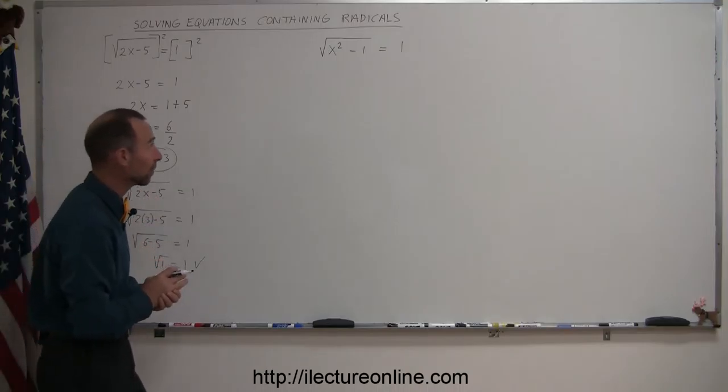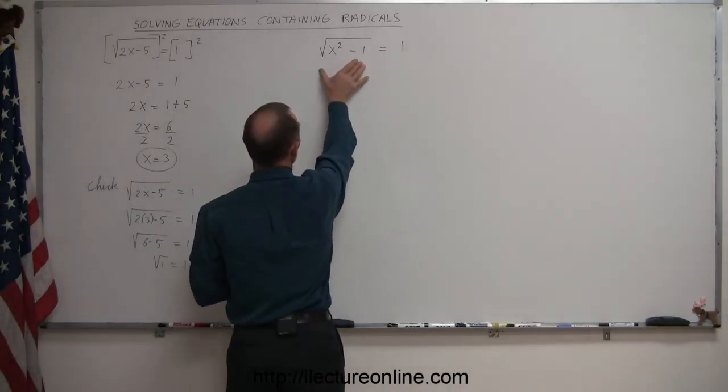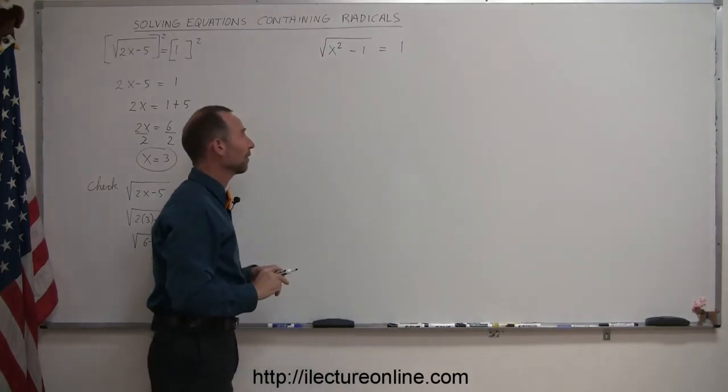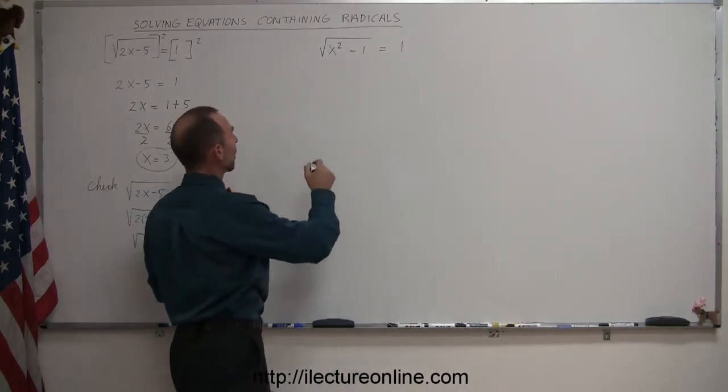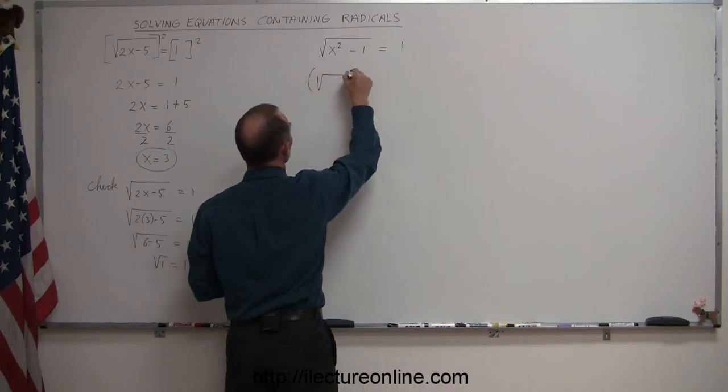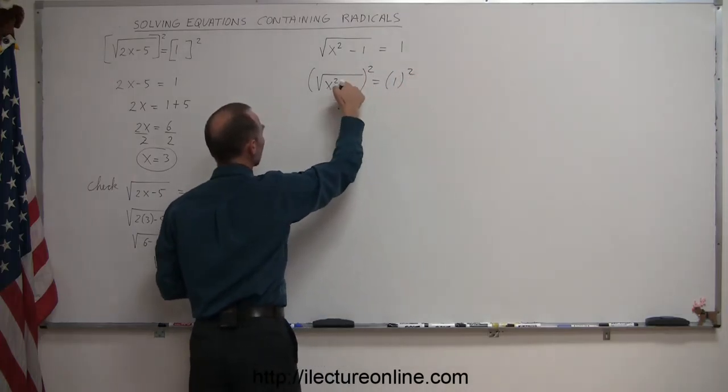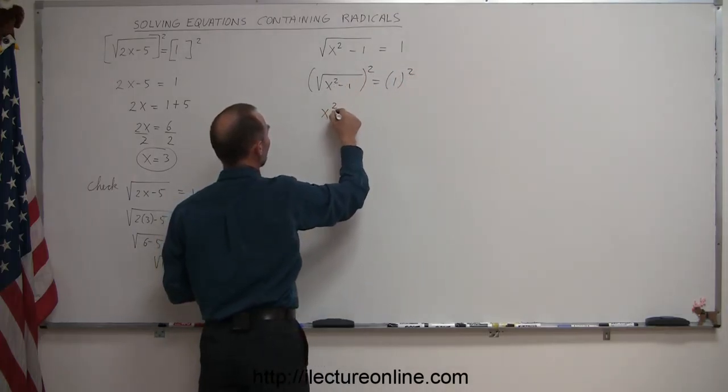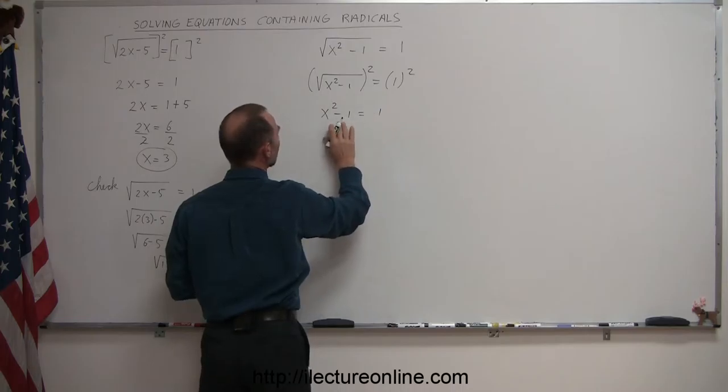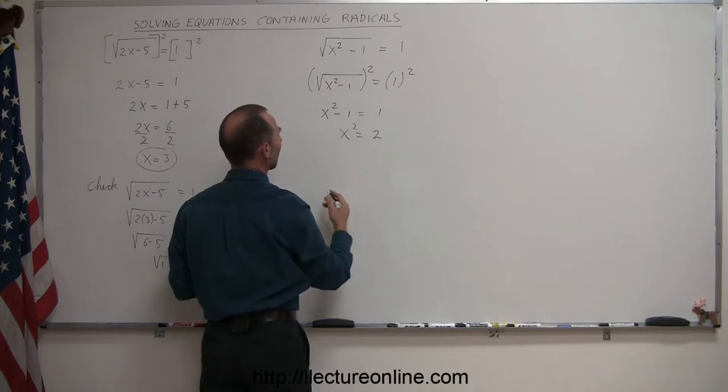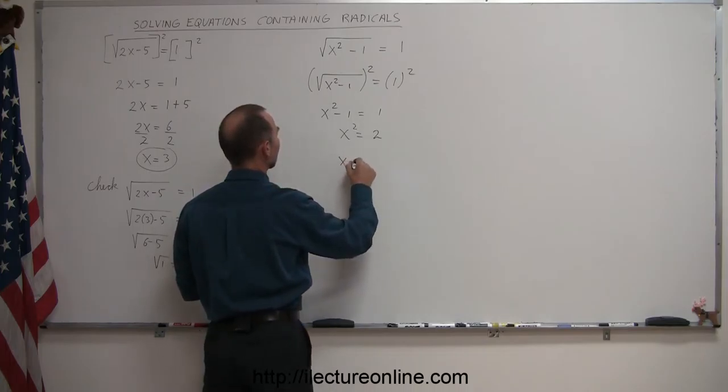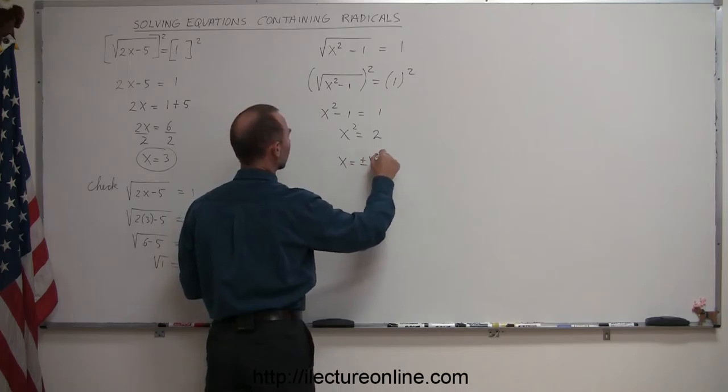Let's move on to our next example. Again, we have the radical separated from all the other terms that don't have a radical. We can then square both sides, so we're going to square the left side, x squared minus 1 quantity squared equals the right side squared. When we square this, the radical disappears. We have x squared minus 1 equals 1. Move the negative 1 over, we have x squared is equal to 1 plus 1, which is 2, and now we take the square root of both sides, so we can say that x is equal to plus and minus the square root of 2.